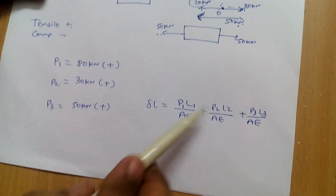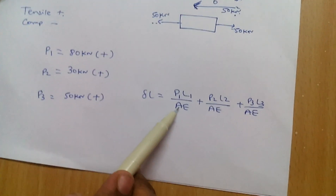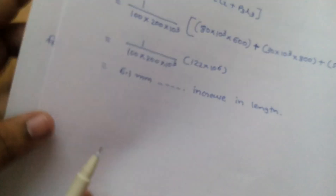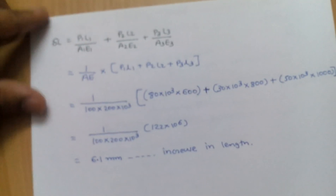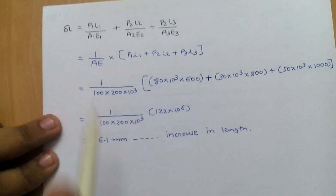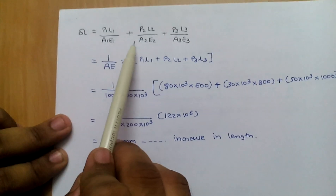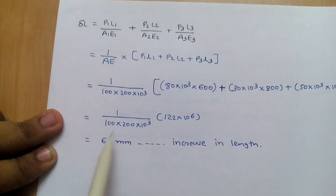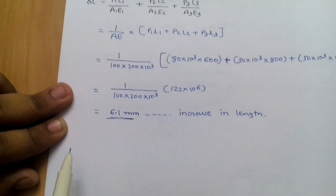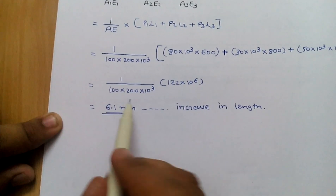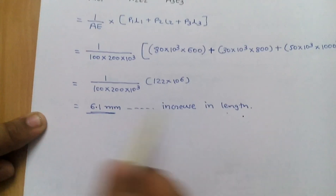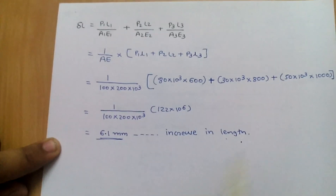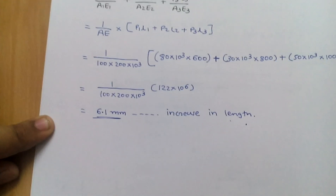Substituting values of P1, P2, P3, L1, L2, L3, A, and E into the equation — for tensile force take plus, for compressive force take minus — putting all values, we get the answer as 6.1 mm. Since the answer is positive, that means there is an increase in length. If the answer were negative, it would mean a decrease in length. Thank you.